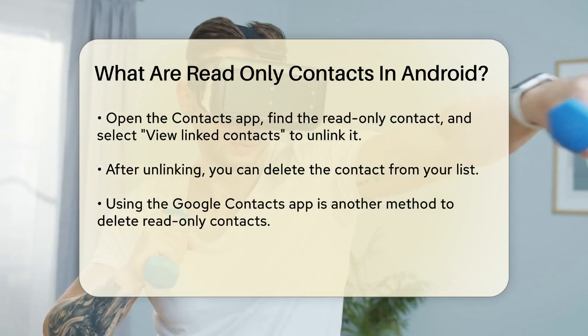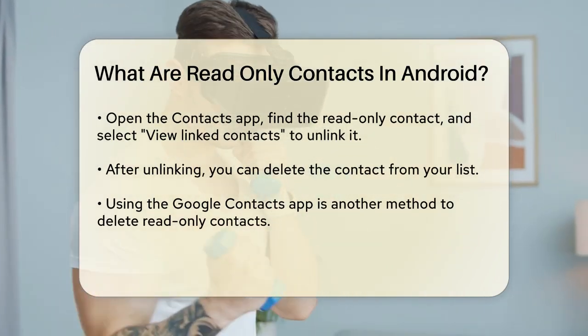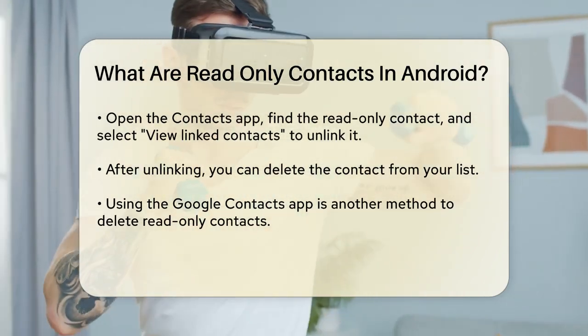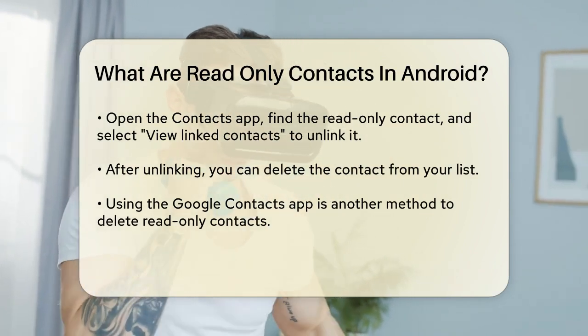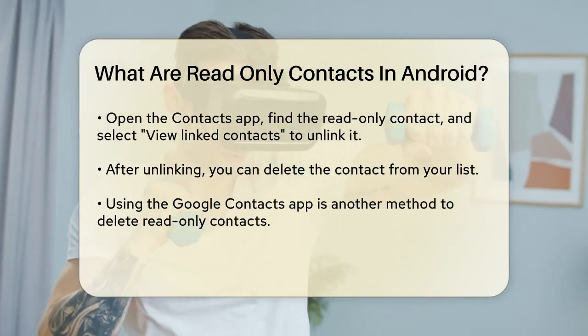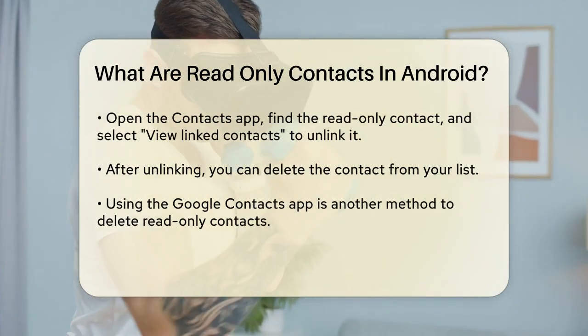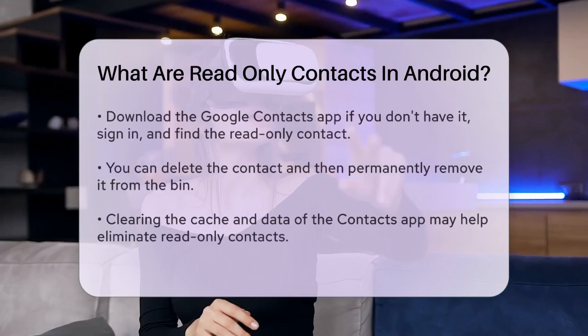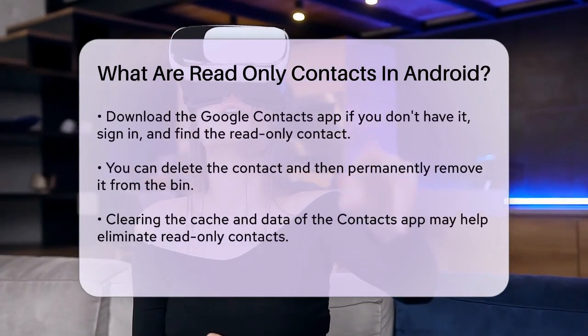Another way is to use the Google Contacts app. If you don't have it, you can download it from the Play Store. Sign in with your Google account, find the read-only contact, tap the three dots, select Delete, and then move it to the bin.